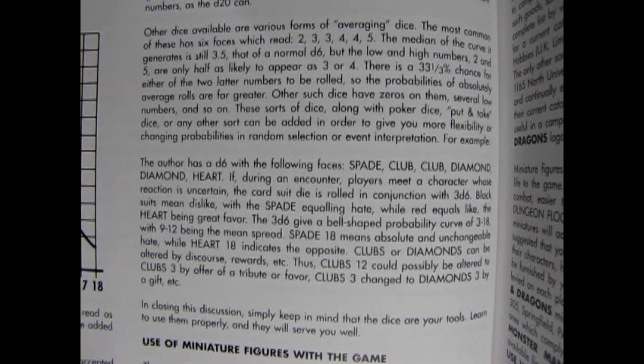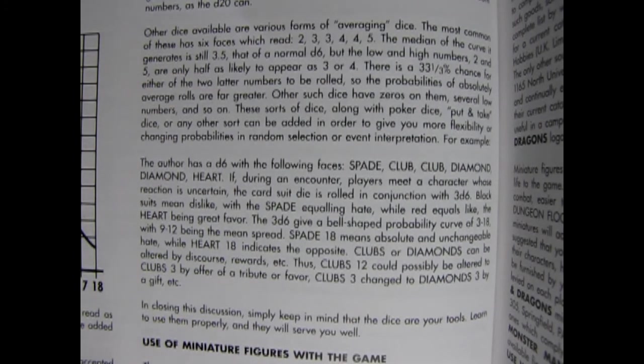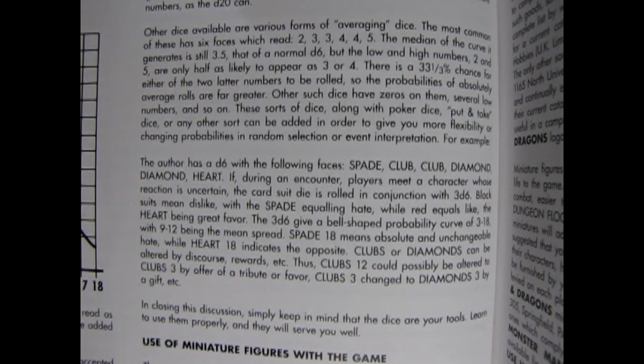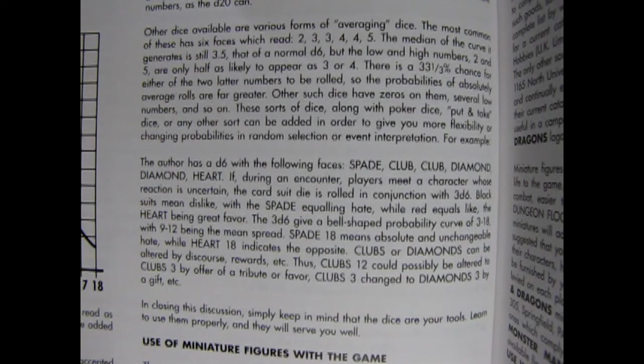For example, the author has a D6 with the following faces: spade club, club diamond, diamond heart. If during an encounter, players meet a character whose reaction is uncertain, the card suit die is rolled in conjunction with 3d6. Black suit means dislike, with the spade equaling hate, while red equals like, the heart being great favor. The 3d6 give a bell-shaped probability curve of 3 to 18, with 9 to 12 being the mean spread. Spade 18 means absolute and unchangeable hate, while heart 8 indicates the opposite. Clubs or diamonds can be altered by discourse, rewards, etc.